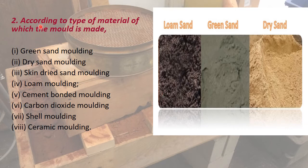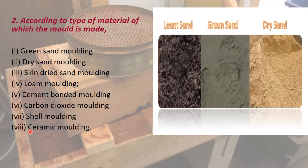Now we will see the classification according to the type of material of which the mold is made. They are classified as: green sand molding, dry sand molding, solid sand molding, skin dried sand molding, loam molding, cement bonded molding, carbon dioxide molding, shell molding, and ceramic molding. In this class we will be discussing about the first four topics: green sand molding, dry sand molding, skin dried sand molding, and solid sand molding.